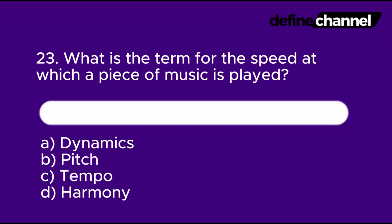Question 23: What is the term for the speed at which a piece of music is played? A. Dynamics. B. Pitch. C. Tempo. D. Harmony. In 10 seconds, which do you think is the correct answer?